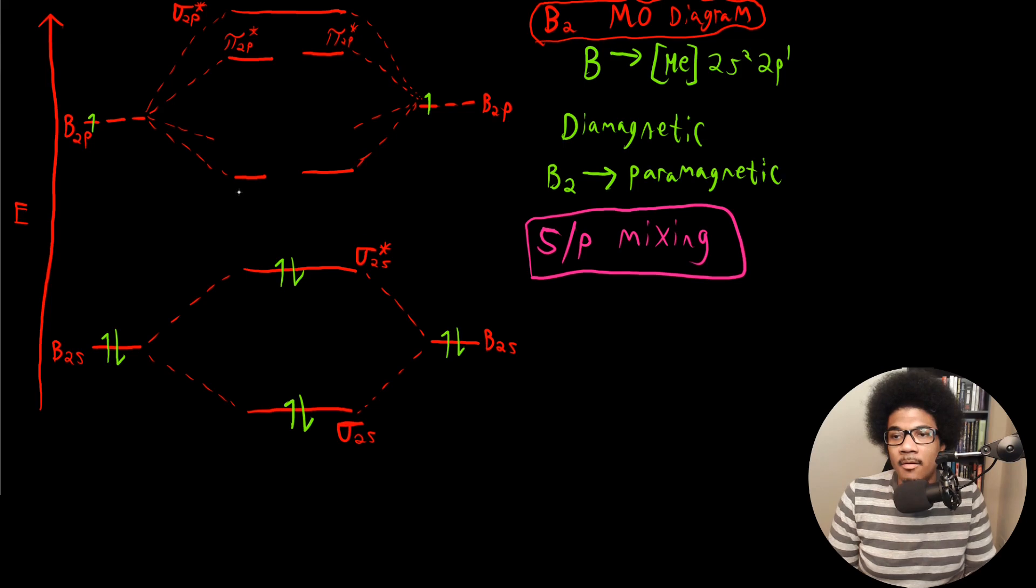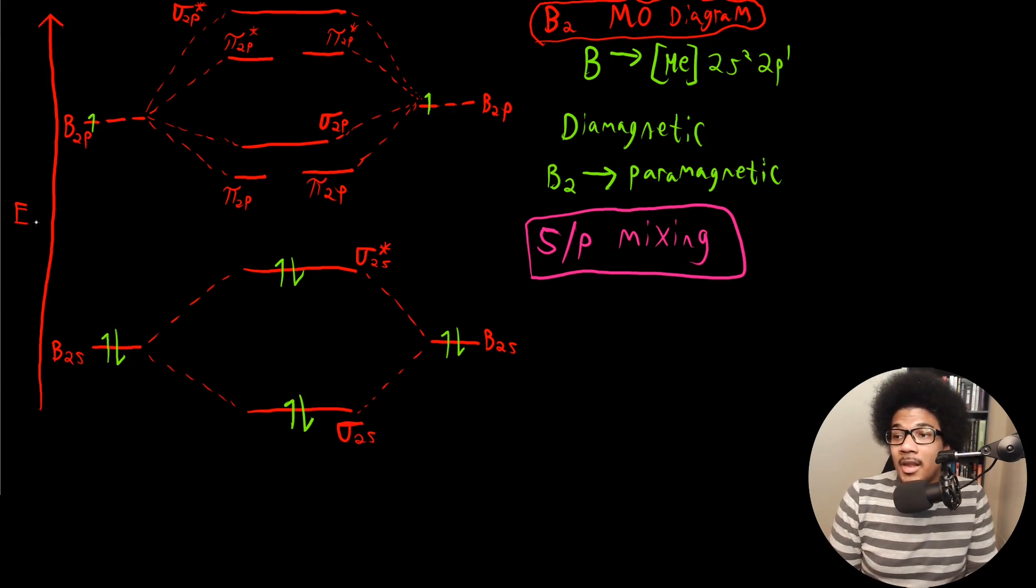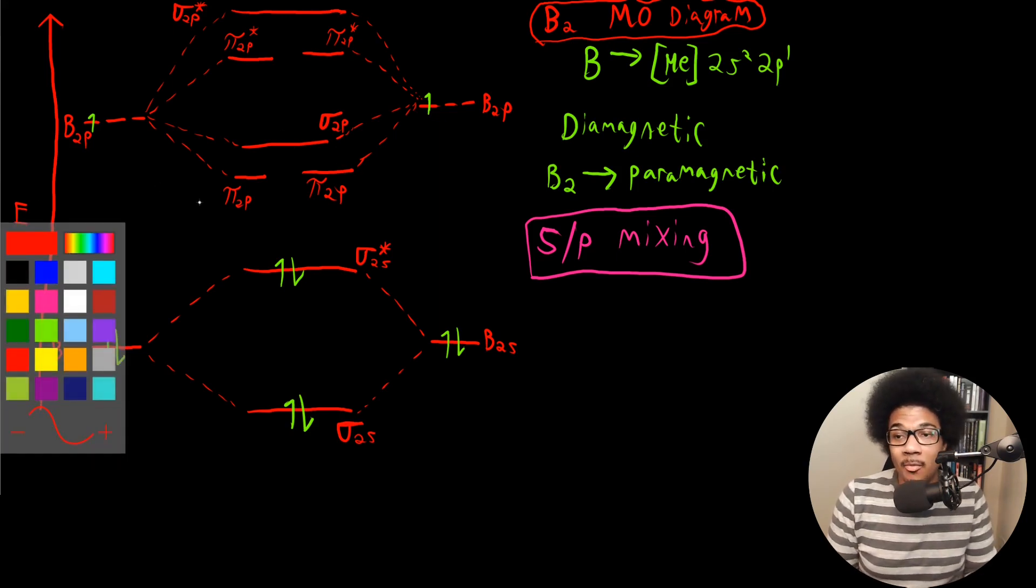So what's going to happen here is that the 2P orbitals are going to be lower in energy. So you're going to have pi 2P, pi 2P, and the sigma 2P is going to be raised a little bit in energy. So this is a result of SP mixing. Because the S orbitals and P orbitals in certain molecules are close enough in energy, they actually mix with one another and cause this separate energy ordering.